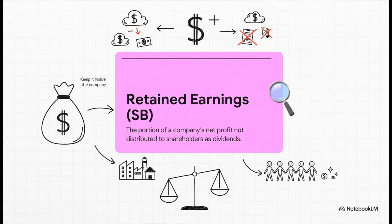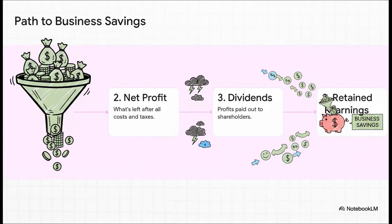That term is retained earnings. After a company pays for all its supplies, its employees, and its taxes, it's left with its net profit. At that point, it has a simple choice: does it give that money to its owners — the shareholders — in the form of dividends? Or does it keep that money inside the company to reinvest? The part it decides to keep is business savings. You can picture a company's money flow like a big funnel: at the very top, all the revenue pours in; chunks get taken out for costs, expenses, and taxes; and what comes out the bottom is the net profit. That profit stream then gets split — the part that flows out to shareholders is the dividend, but the part kept inside the company's own piggy bank? That's its retained earnings — that's its savings.